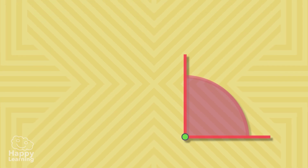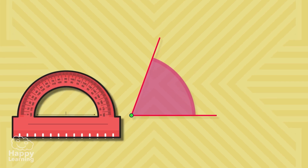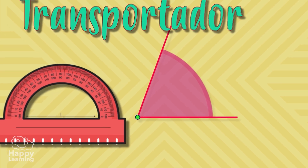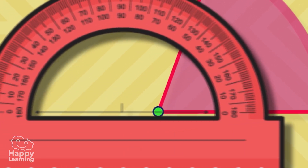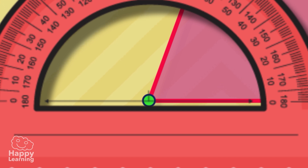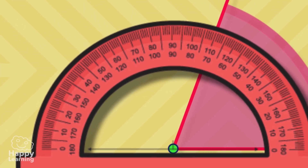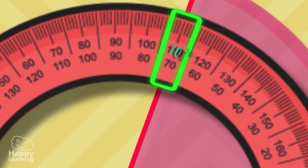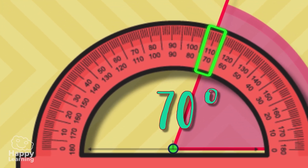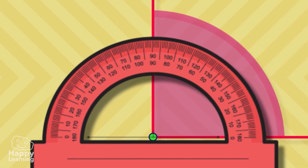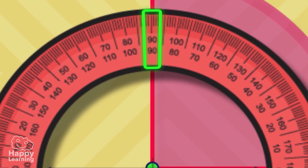To know the degrees that an angle measures, we need to use an instrument called a protractor. We place the straight part of the protractor over one side of the angle, making the vertex and the central point of the protractor meet. Then we look at the protractor line on the other side of the angle and read the number — those are the degrees the angle measures.